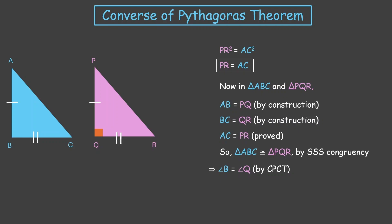But we know that angle Q is 90 degrees—we constructed it like that. So this gives us that angle B is also 90 degrees, and that is what we wanted to prove. So we see that if the square of the hypotenuse equals the sum of the squares of the other two sides, then by the converse, the angle opposite to the hypotenuse is indeed 90 degrees.